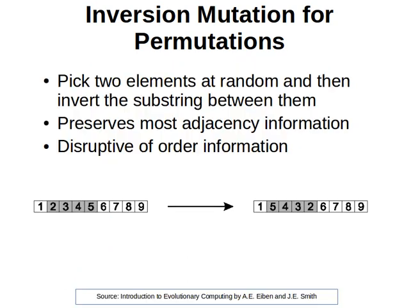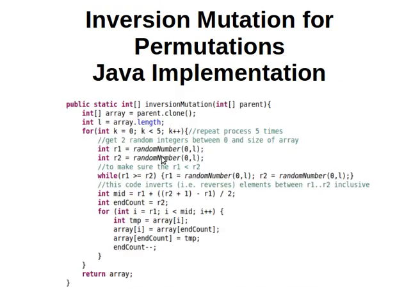Now for the inversion mutation, as we mentioned, this is how it works. In the code here, I actually do it five times. The input to the method is an integer array, we make a clone of it, we calculate the length, and then we repeat the idea of randomly choosing two points and then reversing the subarray between them — we repeat it five times.